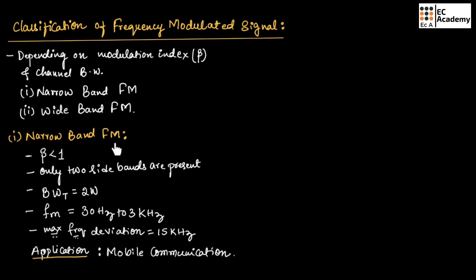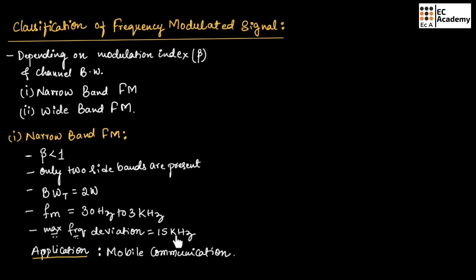In narrow band FM, the modulation index will be less than 1 and only two side bands are present. The transmission channel bandwidth will be equal to 2W. The message signal frequency will be between 30 Hz to 3 kHz, and the maximum frequency deviation will be 15 kHz. The application is mobile communication.